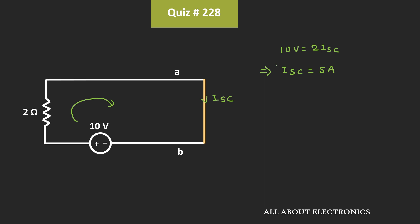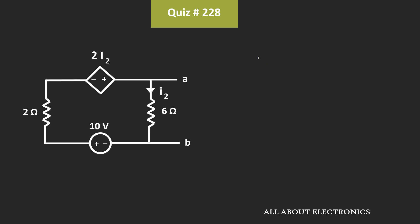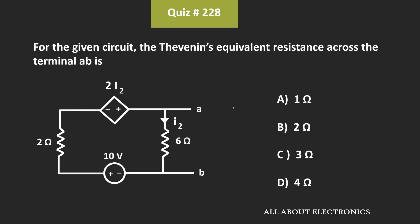So for the given circuit, the Thevenin's equivalent voltage is equal to 10V, while the short circuit current Isc is equal to 5A. That means the Thevenin's equivalent resistance Rth is equal to 10V divided by 5A, which equals 2 ohm. Therefore, for the given question, B is the correct answer.